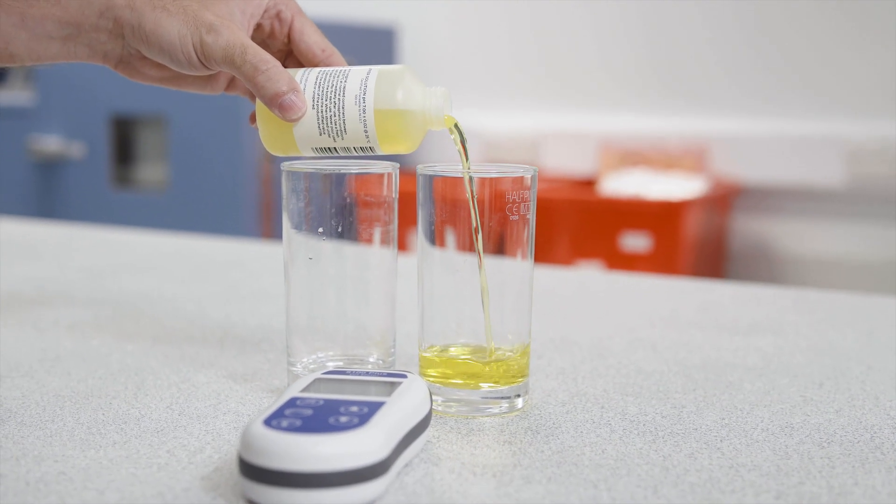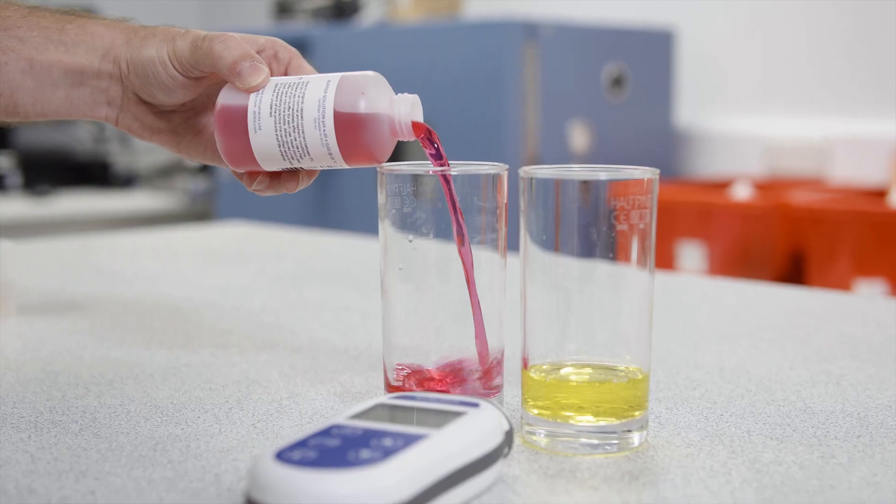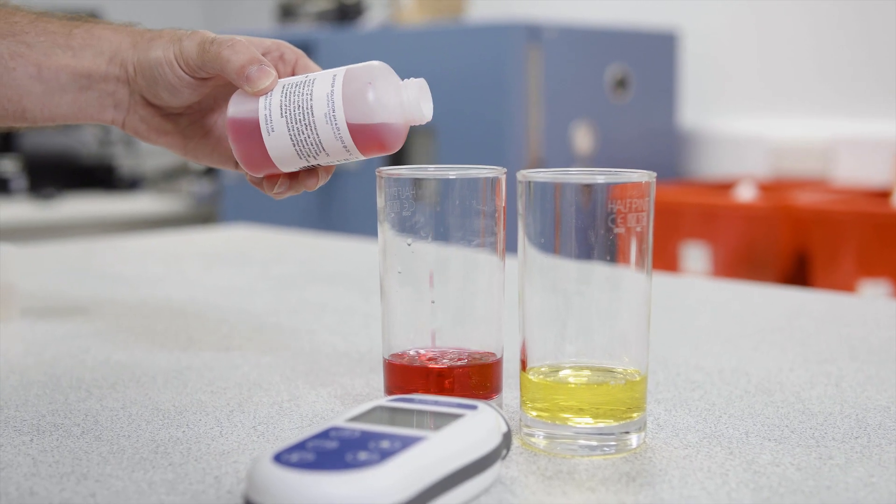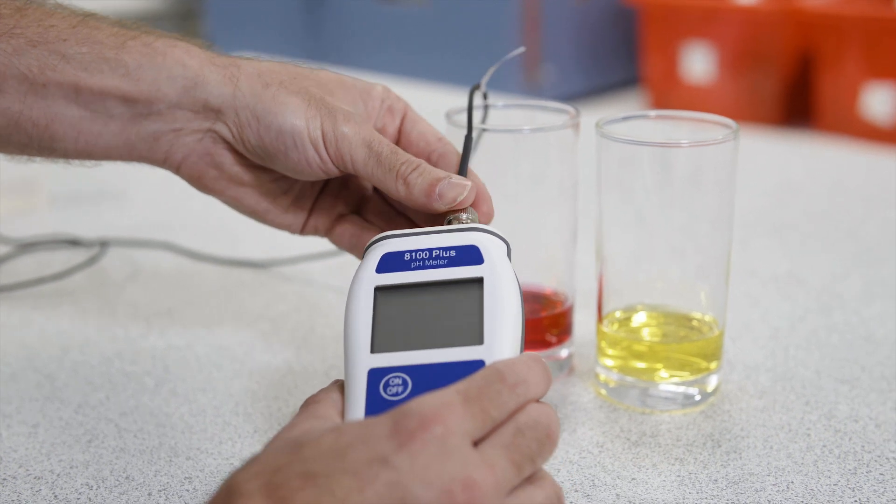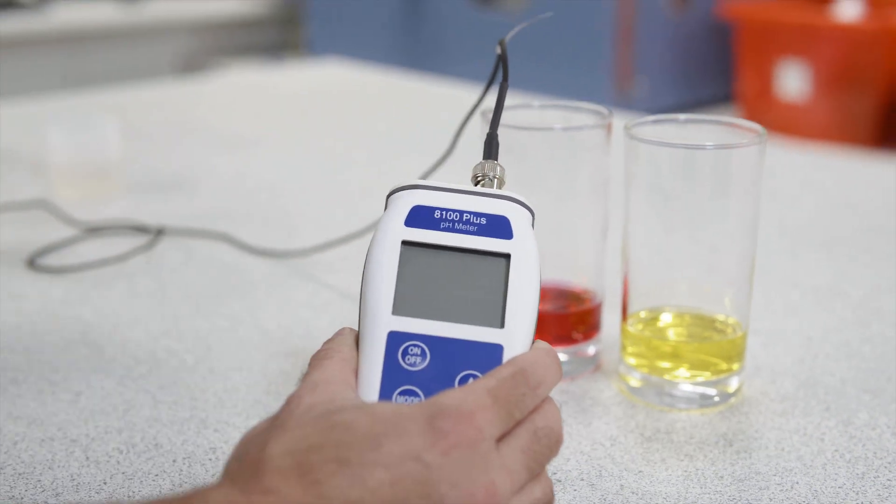Start by pouring a small amount of the two buffer solutions into two separate containers. Connect the pH electrode and temperature probe to the 8100 Plus pH meter.